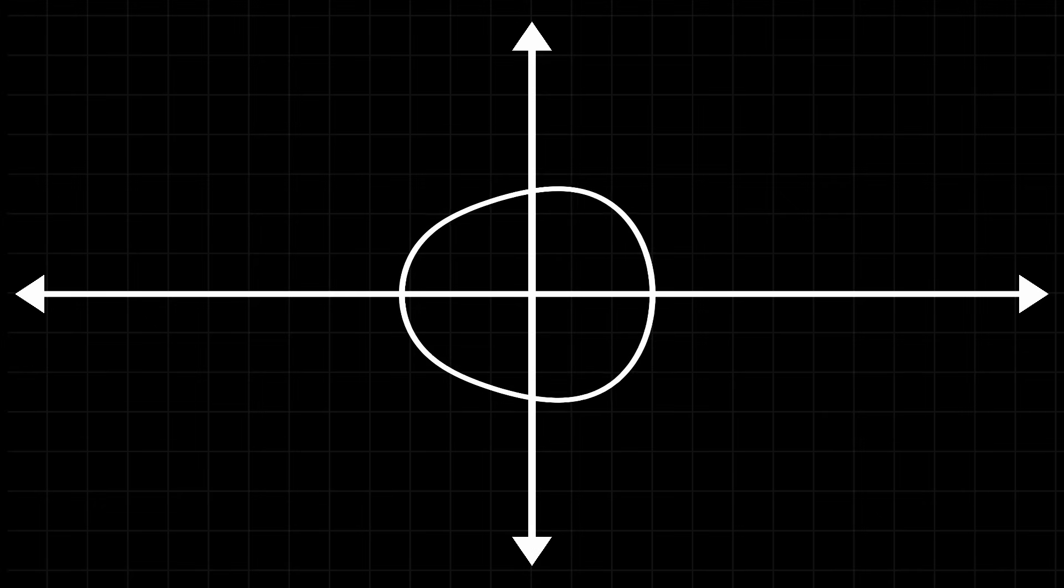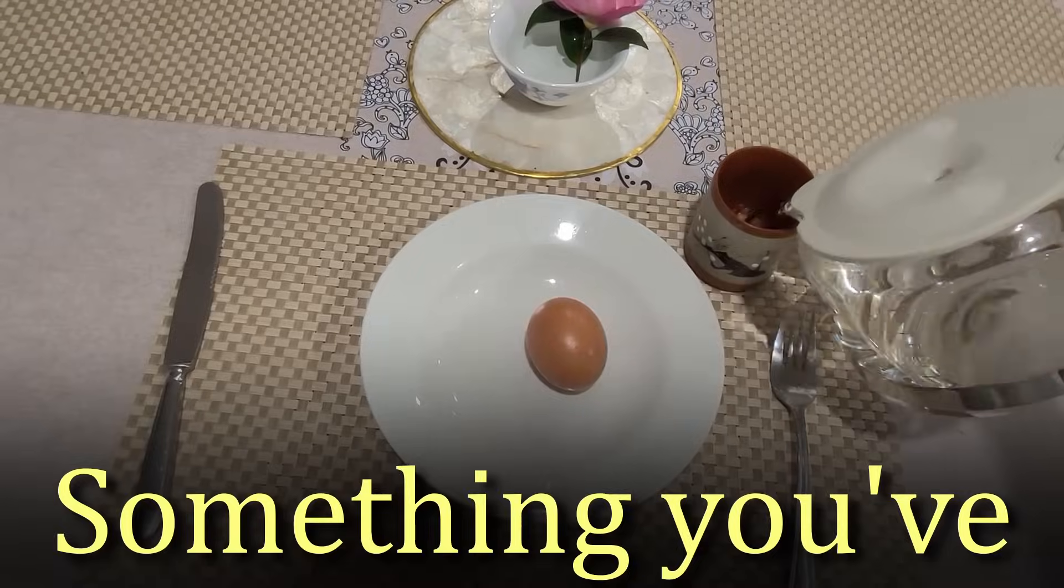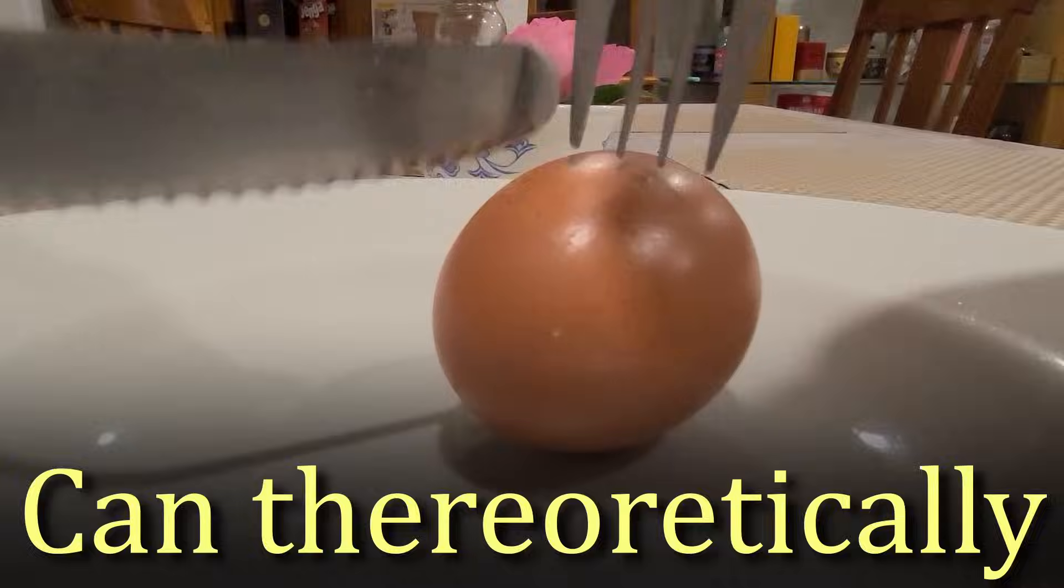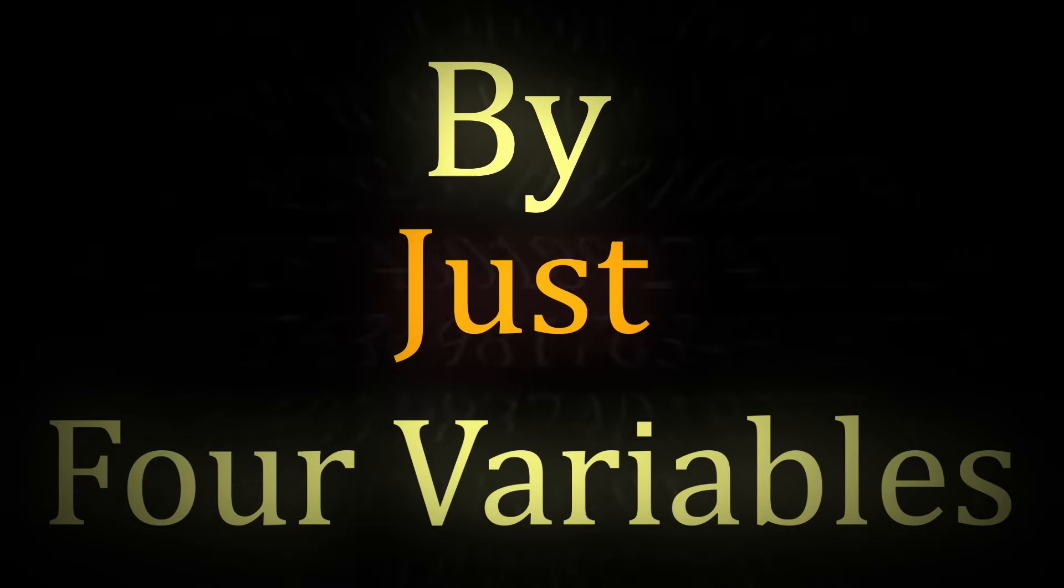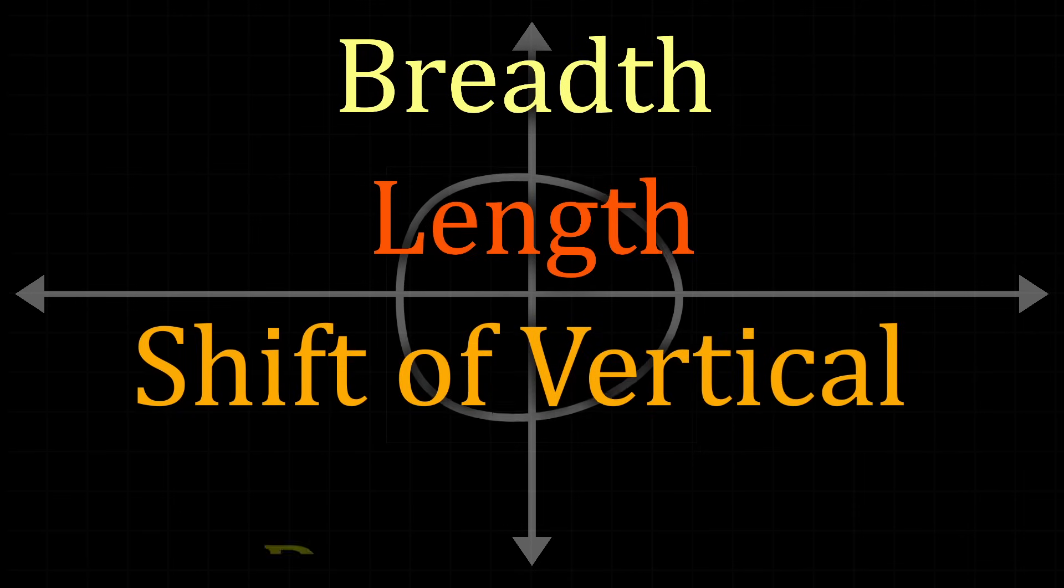Just let this all sink in. It's honestly quite amazing when you think about it. An egg. Something that recurs in nature, something that you've likely eaten for breakfast, something that can theoretically take on infinite shapes, can be described by just four variables. Breath, length, shift of vertical axis, and pear shapeness.